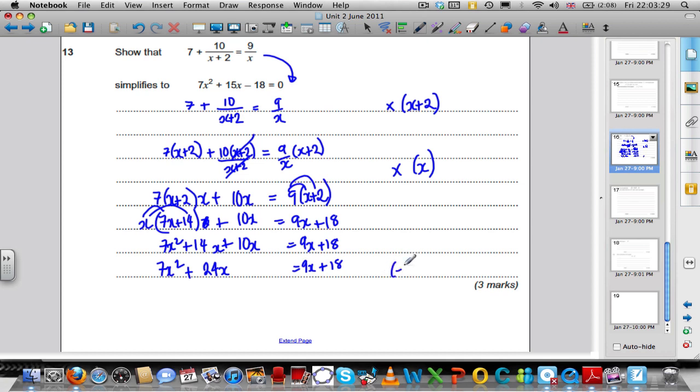Tied in up, I've got 7X squared plus 24X is equal to 9X plus 18. Now I'm going to subtract 9X off both sides and subtract 18 off both sides. I get 7X squared. 24 take away 9X gives me 15X, and nothing take away 18 gives me subtract 18. That is equal to 0, and hence we have shown what we needed to.